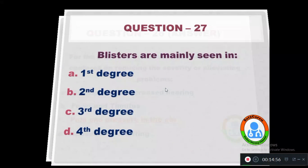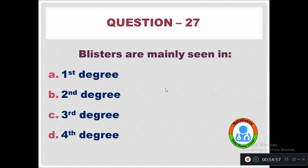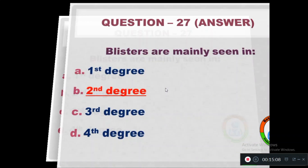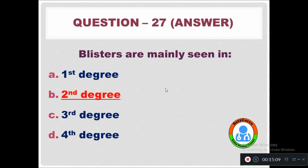Question 27: Blisters are mainly seen in — Option A: First degree burns. Option B: Second degree burns. Option C: Third degree burns. Option D: Fourth degree burns. Blisters are commonly seen in second degree burns.